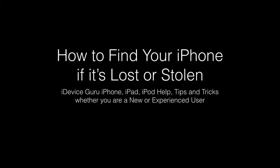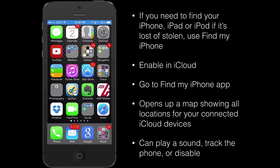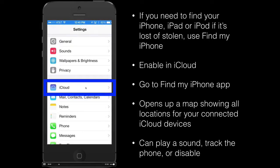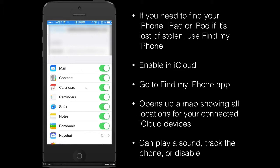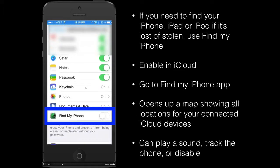Tip number five: if you've ever lost your iPhone or had it stolen, here's an easy way to find it. Apple has built in an app called Find My iPhone. Go to iCloud in your Settings, then scroll down to Find My iPhone and toggle the switch on — it will give you a confirmation that it's enabled.